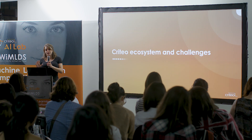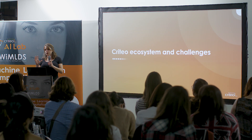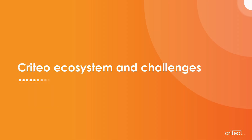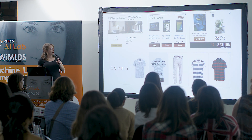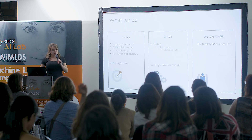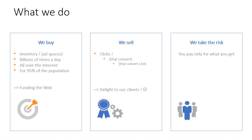Before we drill into the details, I'm going to give a very quick overview. Many things have been covered by Suju, but just so we remember the vocabulary and we're all on the same page. So this is what we do: we buy inventory at space online, we sell clicks that hopefully convert with a big amount of money, and we take the risk instead of our clients.